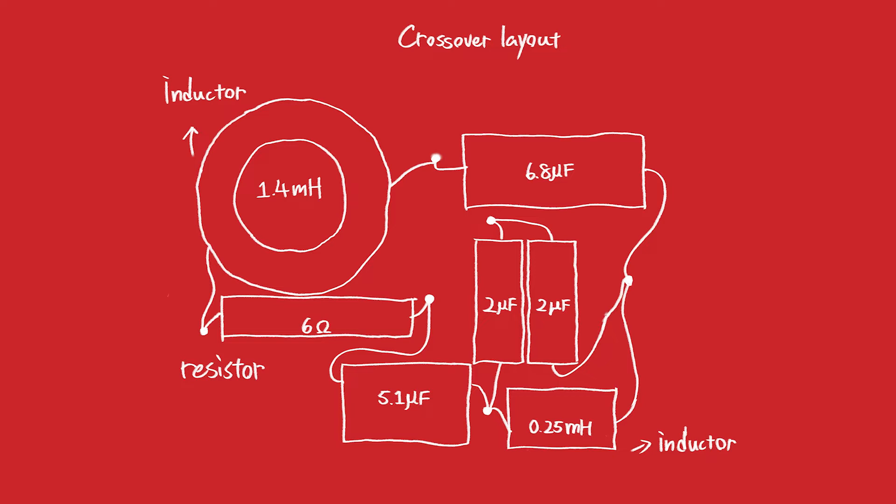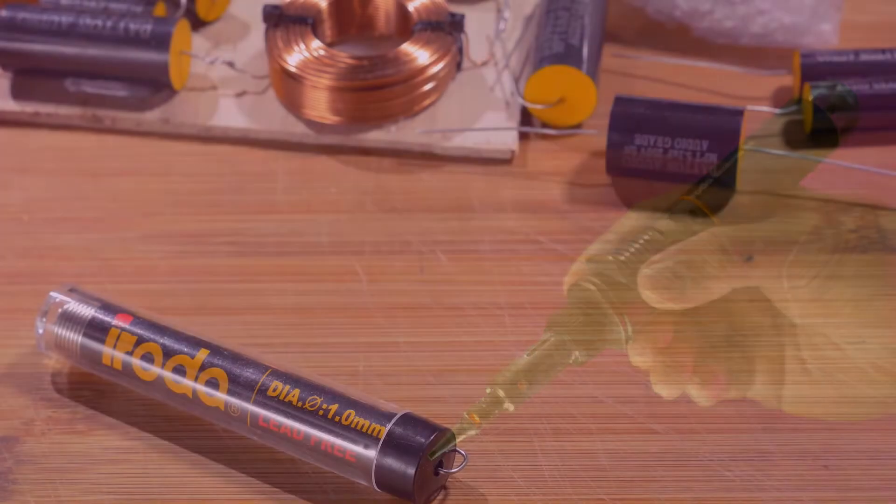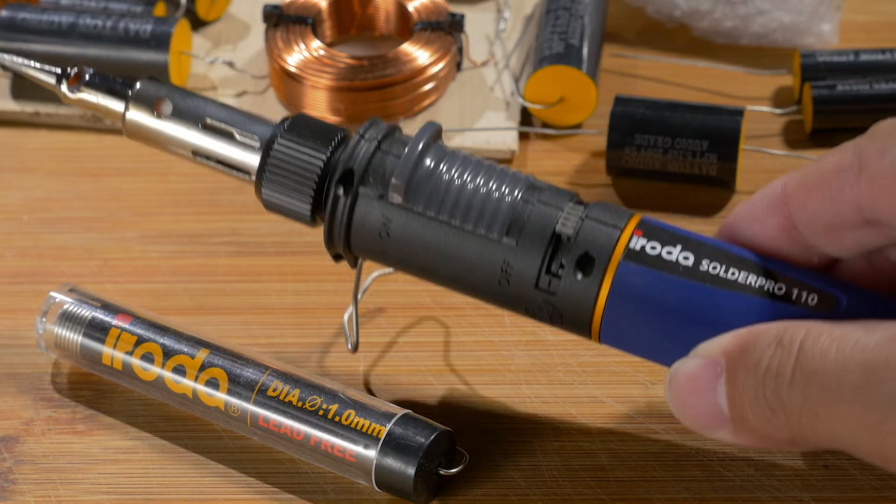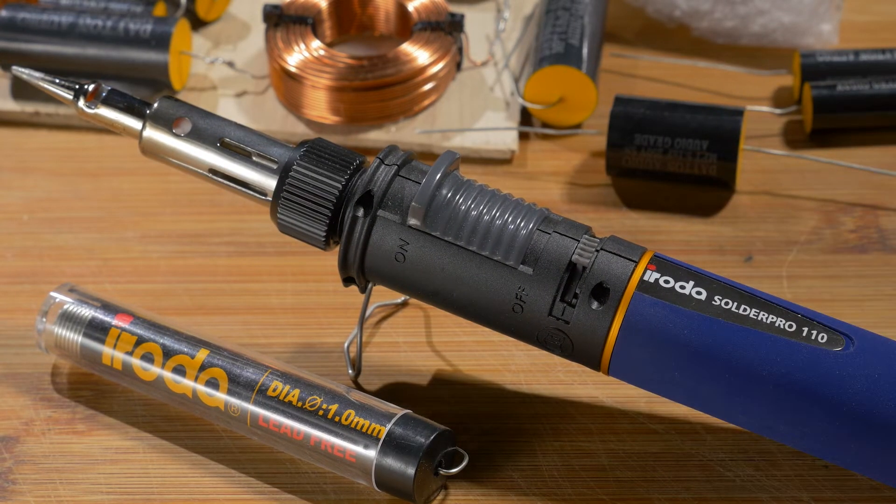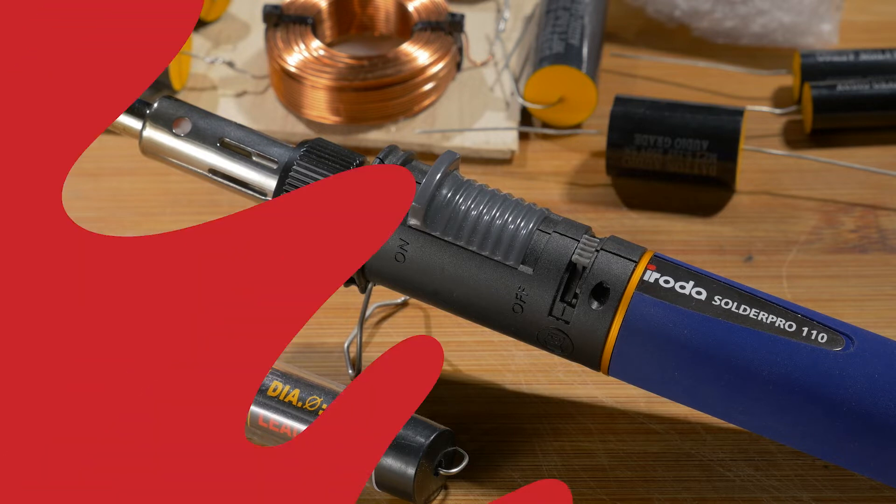The necessary tool at this point is to get yourself a decent soldering iron. I'm going to be using the Iroda Solder Pro 110 butane soldering iron. It's great to use butane just because I'm not really tied to a power source and I can move it in and out of cramped spaces quite easily. It's a great soldering iron, highly recommended for speaker builds.